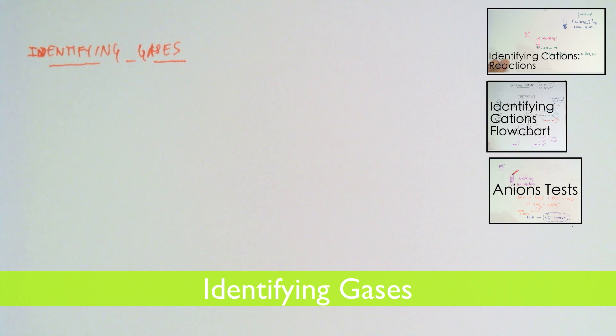In this video we'll look at how we can identify gases. The five gases we'll be testing today are hydrogen, oxygen, carbon dioxide, chlorine, and ammonia.